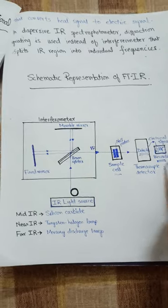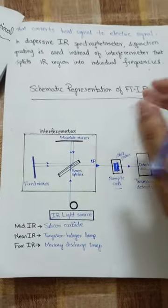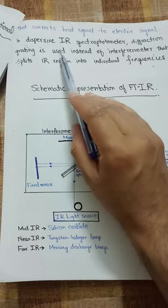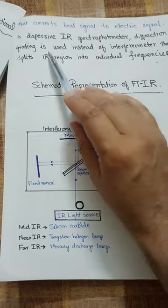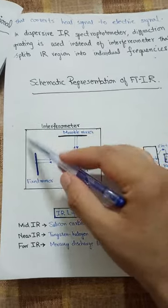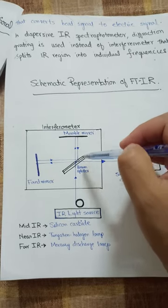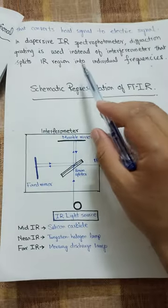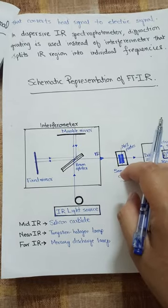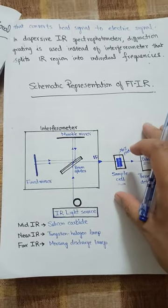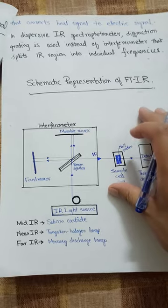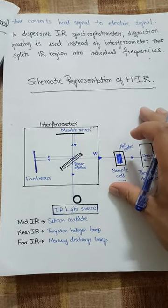Now we will discuss the difference between Fourier transform and dispersive infrared spectrophotometers. In dispersive infrared spectrophotometers, a diffraction grating is used instead of an interferometer. The diffraction grating splits IR radiation into individual frequencies, which then fall onto the sample. This is the key difference between Fourier transform and dispersive infrared spectrophotometers.